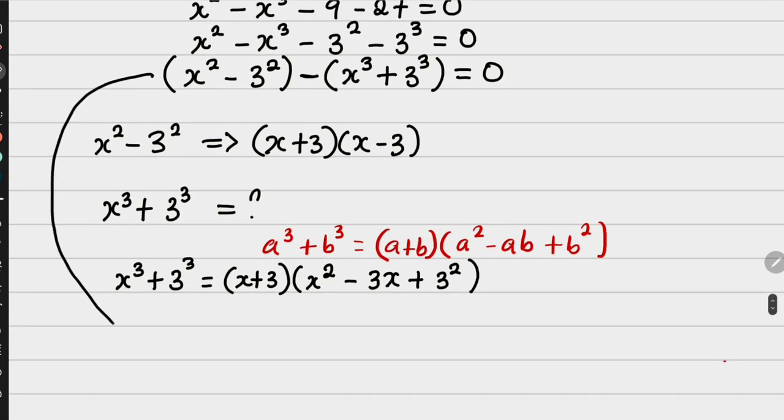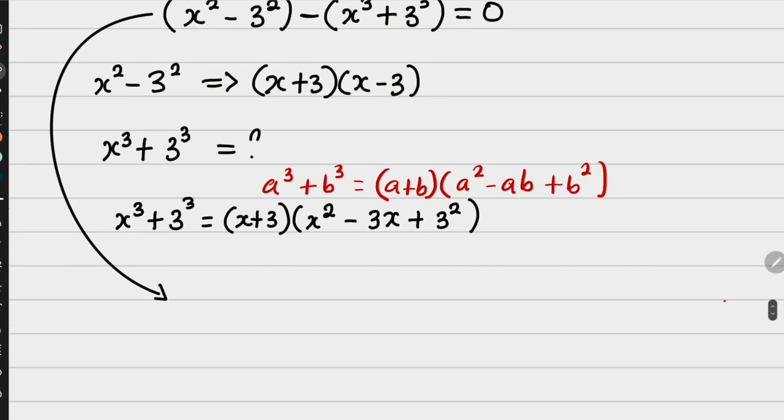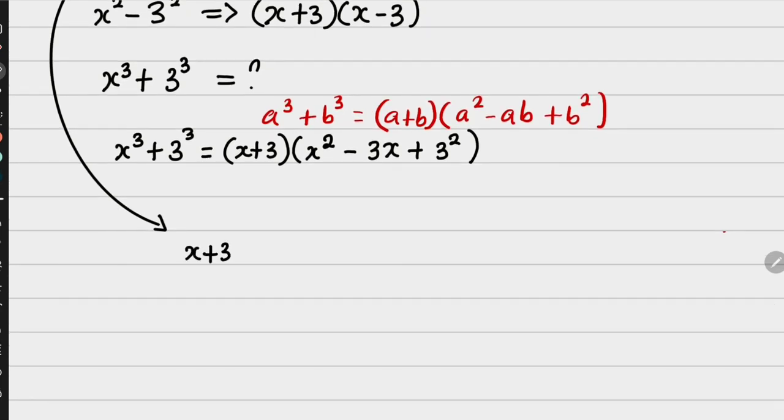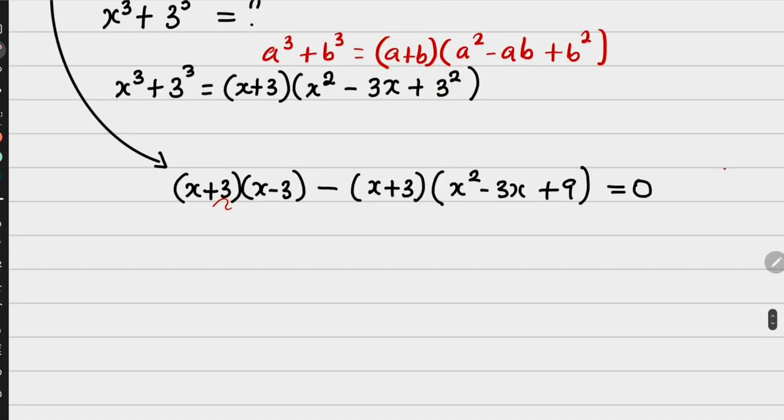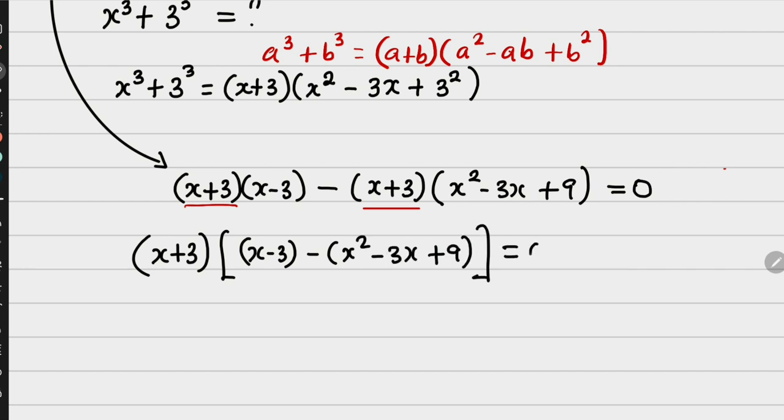Therefore, I can have my x cubed plus 3 cubed to be equals to x plus 3 into x squared minus 3x, then plus 3 squared. So, from this, I'm going to substitute them so that I can have x plus 3 into x minus 3, then minus into x plus 3 into x squared minus 3x plus 9. Now, everything here will be equal to 0.